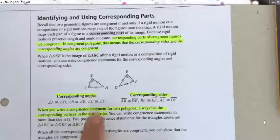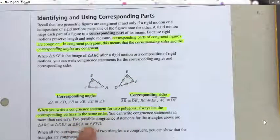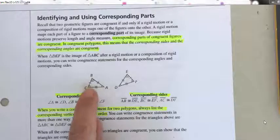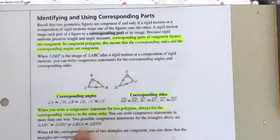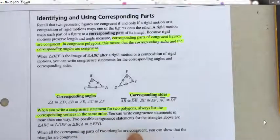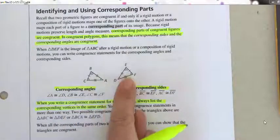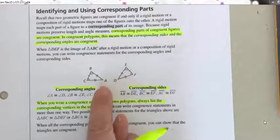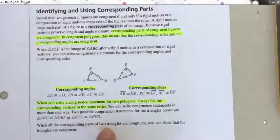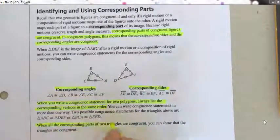Angle B is congruent to angle E — they both have three arcs, so they go first. C and F are also congruent, so those go next. When all corresponding parts of two triangles are congruent, you can show that the triangles are congruent. You can go either way: if you know the triangles are congruent, all their corresponding parts are congruent; or if you know all corresponding parts are congruent, you know the triangles are congruent.